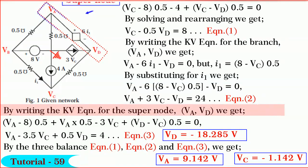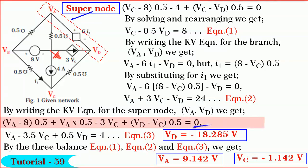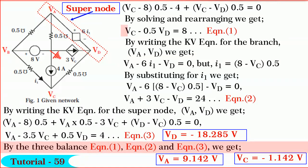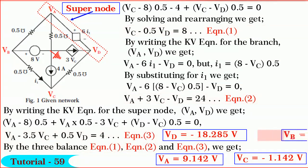By writing Kirchhoff's voltage equation for the super node VA–VD, we get (φA minus 8) times 0.5 mho plus φA times 0.5 mho minus 3VC amperes plus (φD minus VC) times 0.5 mho is equal to 0. By solving and rearranging, we get φA minus 3.5 VD is equal to 4. By solving the three simultaneous equations 1, 2, and 3, we get φA is equal to 9.142 volts, VC is equal to minus 1.142 volts, VD is equal to minus 18.285 volts, and VB is equal to 8 volts.